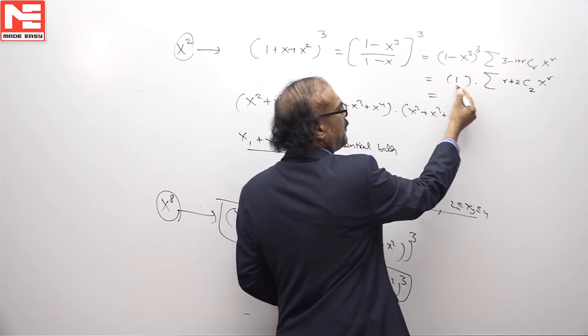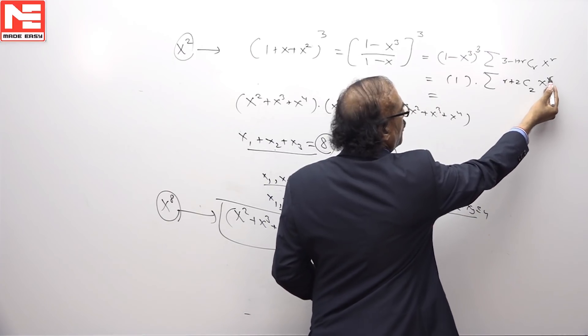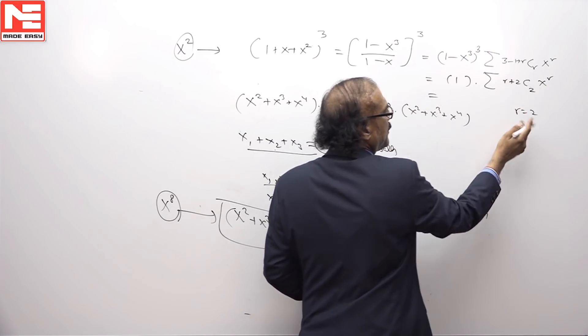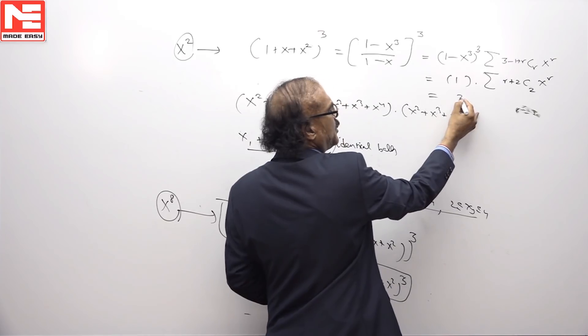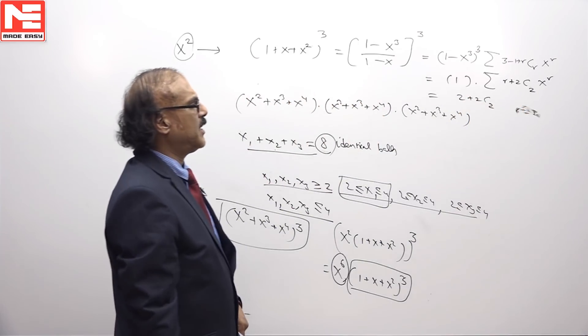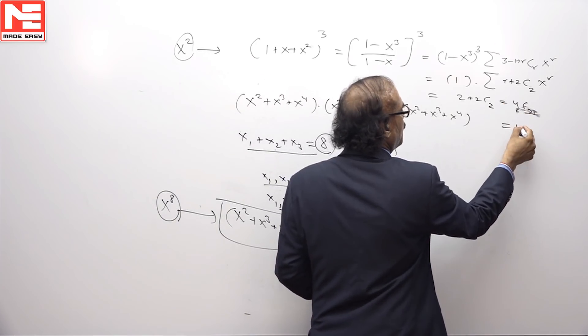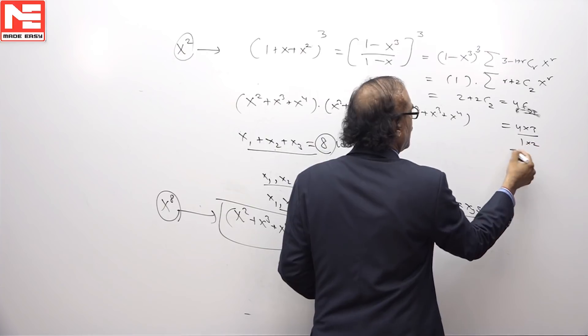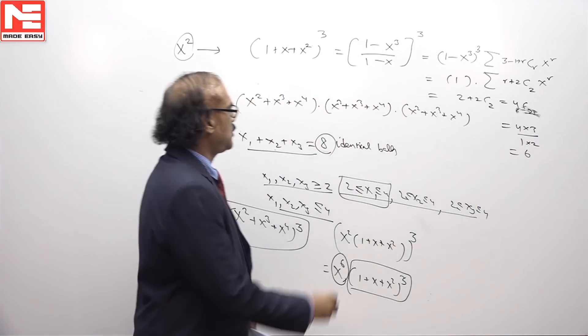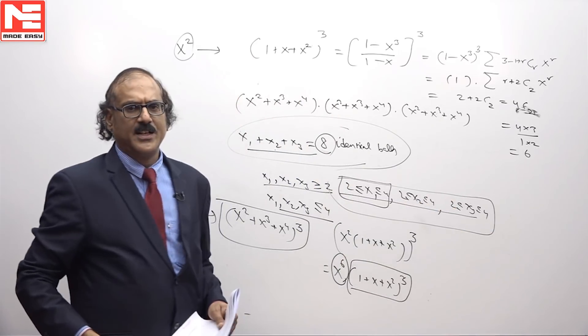Now therefore, there is only one way in which you can get this. Now, let us multiply it, we need to find the coefficient of x square. Put r is equal to 2 here, if you put r is equal to 2 the coefficient is 2 plus 2 c 2. When you put r is equal to 2 we get the coefficient of x square as 2 plus 2 c 2 is 4 c 2 which is 4 into 3 by 1 into 2, exactly there are 6 solutions to this equation subject to this constraint.